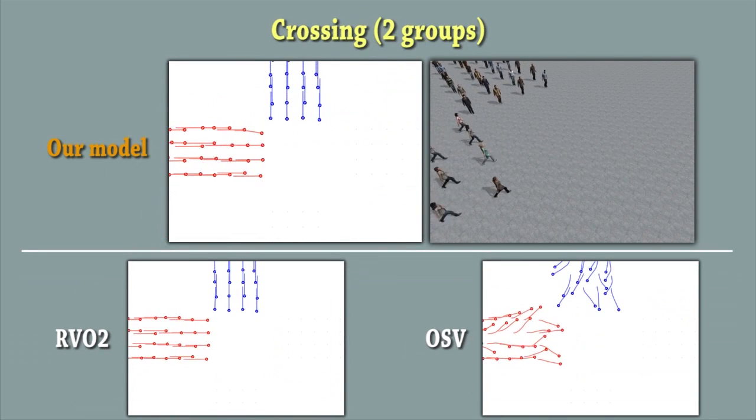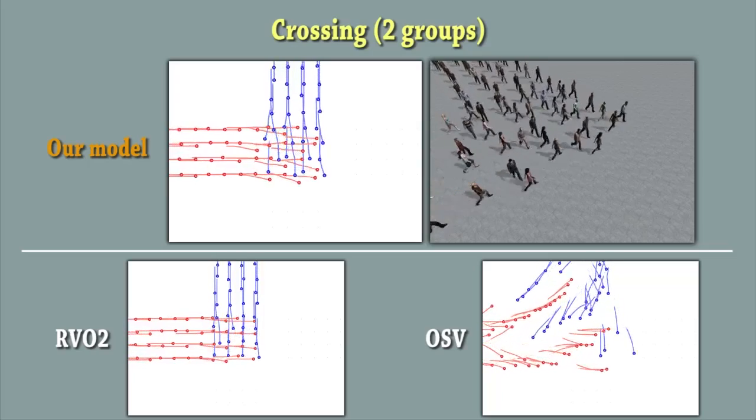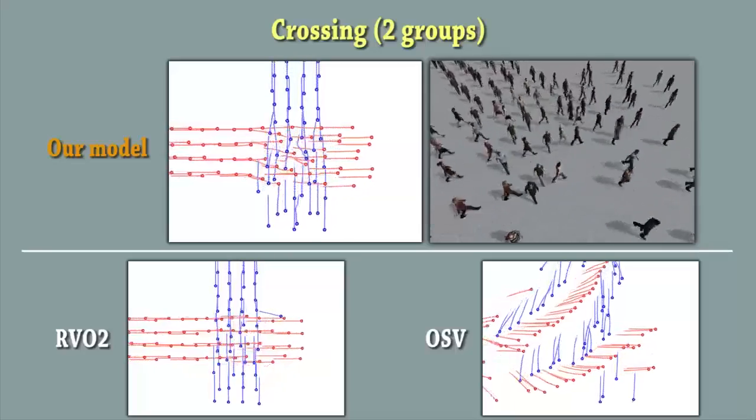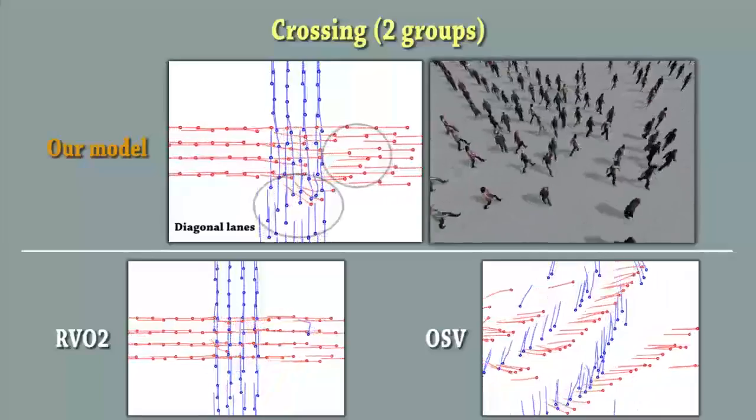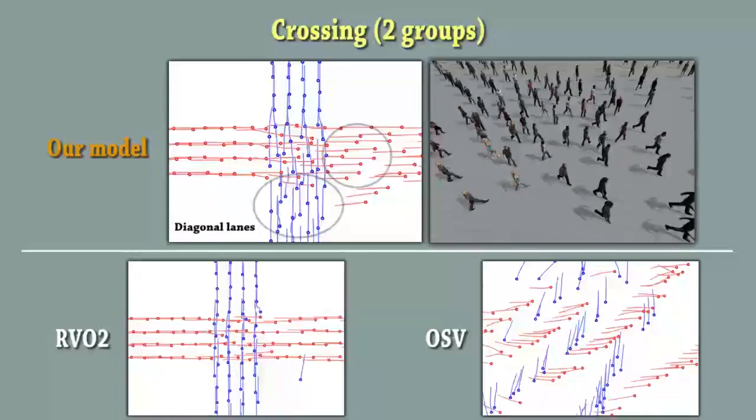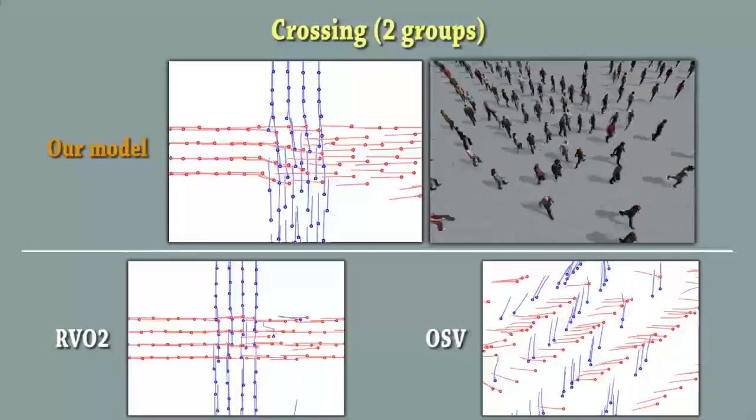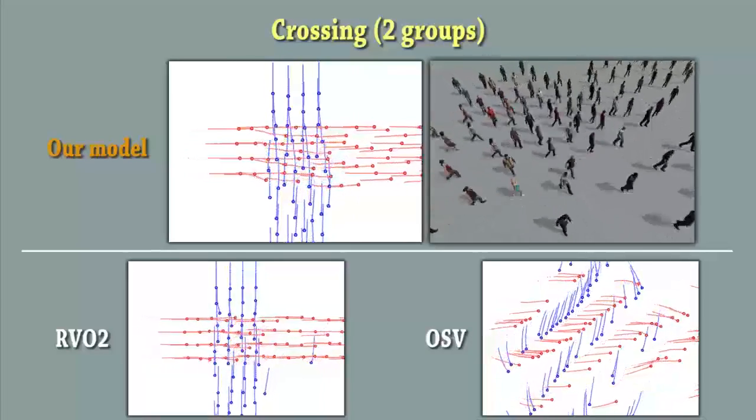In this other scenario, diagonal lanes emerge for our model as the groups cross each other. The formation of such patterns can be observed in real crowds and is acknowledged in the literature. For OSV, the diagonal lanes can be also observed, but at the cost of strong adaptations as well as strong unnatural patterns. RVO makes minimal adaptations with no strong patterns, but the agents don't respect personal space at all.